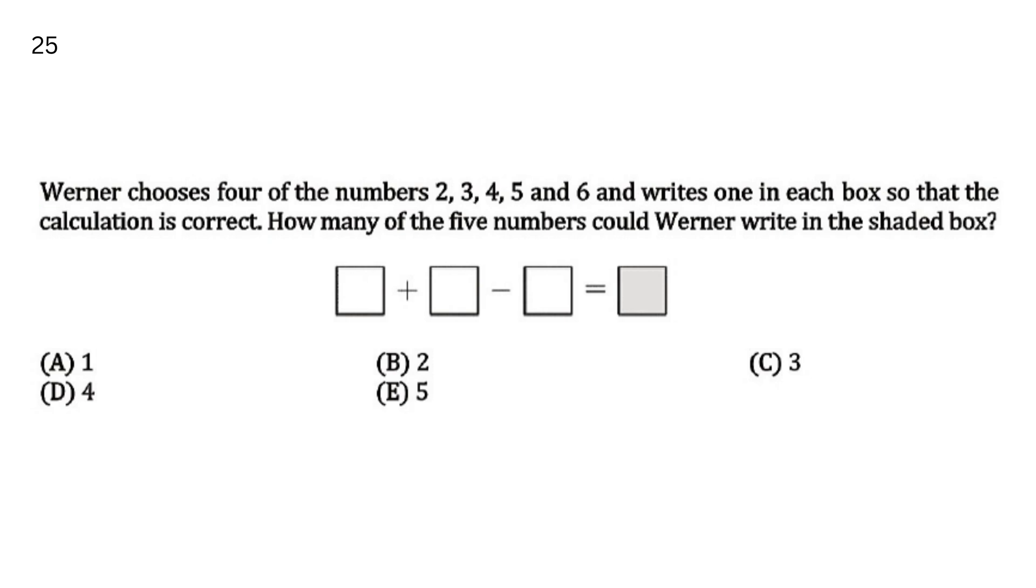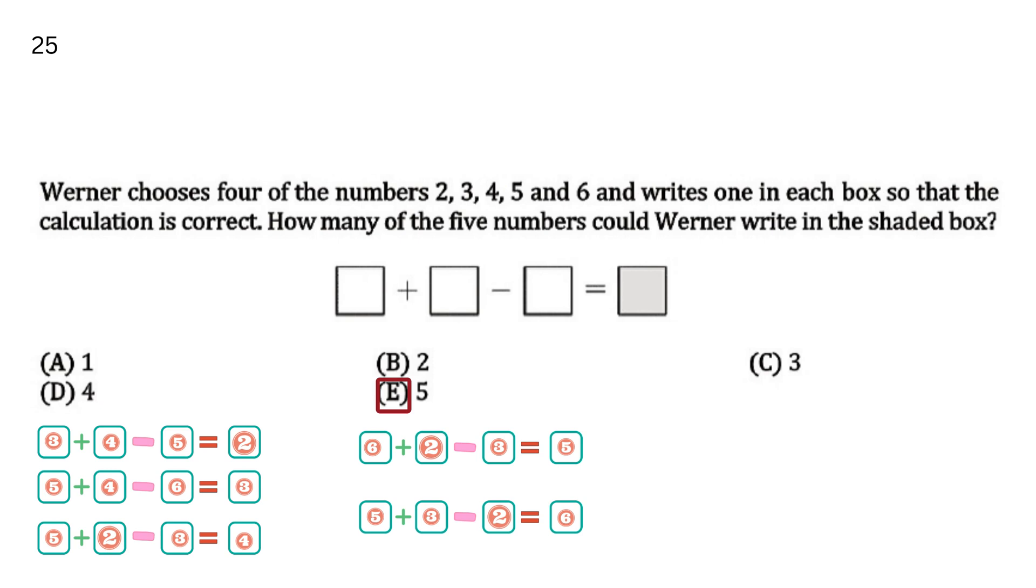Werner chooses four of the numbers 2, 3, 4, 5, and 6, and writes one in each box so that the calculation is correct. How many of the five numbers could Werner write in the shaded box? Werner ne se kitne numbers he could write in the shaded box? Ape options hain A 1, B 2, C 3, D 4, E 5. Your answer is E 5, as explained.